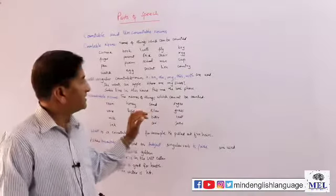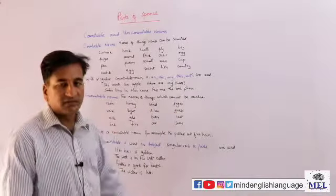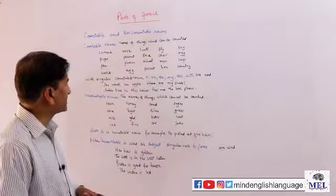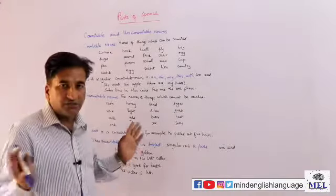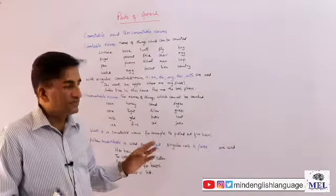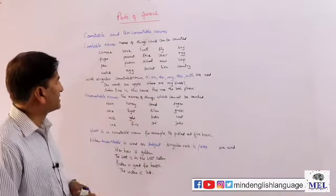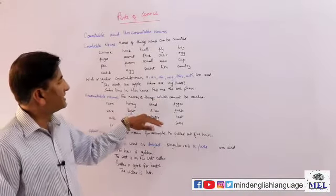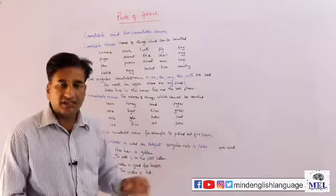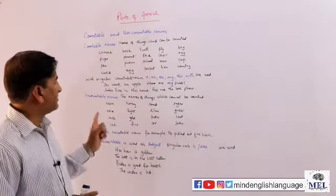Uncountable nouns - the names of things which cannot be counted. Rain, honey, sand, sugar, and these things are not counted. Voice, light, silver, grass - this is not counted.